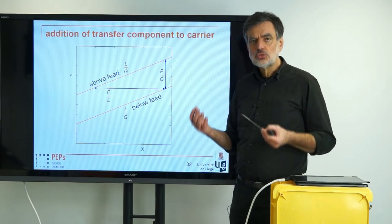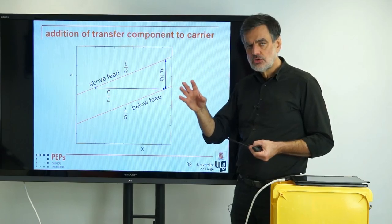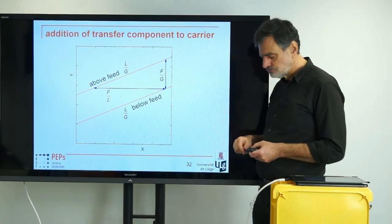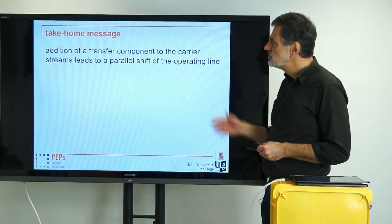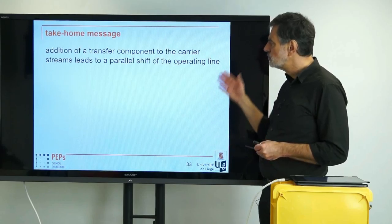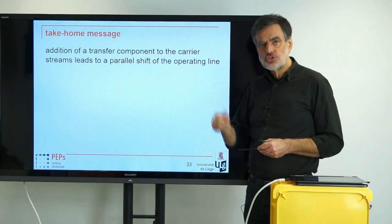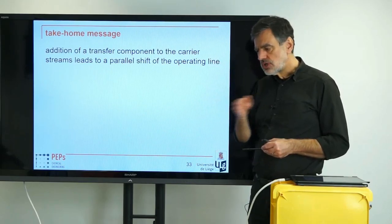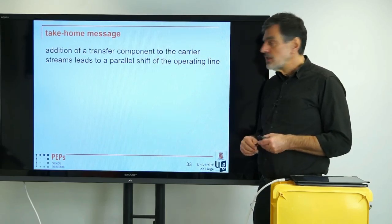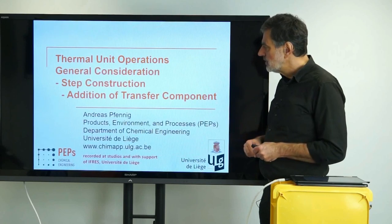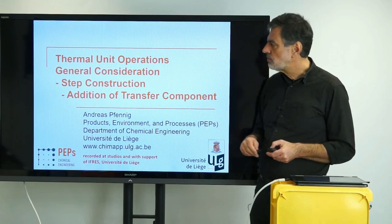So it's that easy to describe a feed of just the transfer component to this counter-current process for separation. We can sum that up in a simple take-home message: the addition of a transfer component to the carrier streams leads to a parallel shift of the operating line, just by F-dot over G-dot or F-dot over L-dot, depending if you regard it vertically or horizontally.